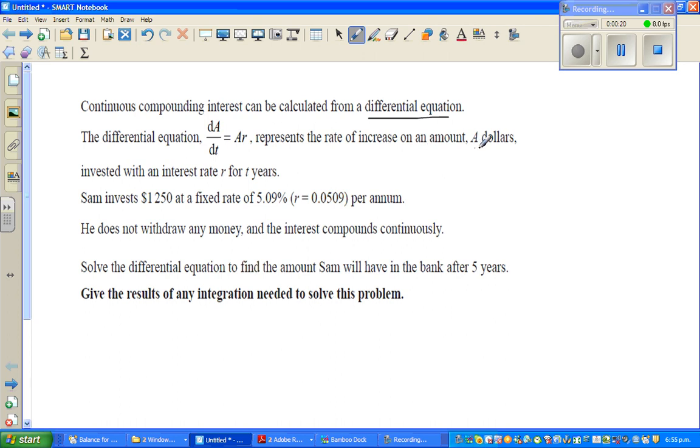A is the amount invested at the interest rate r for t years. Sam invests $1,250 at a fixed rate of 5.09% (as a decimal, r = 0.0509) per annum. He does not withdraw any money and the interest compounds continuously.